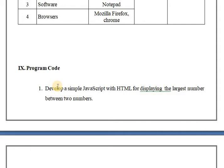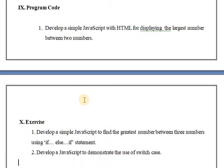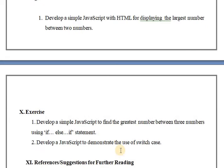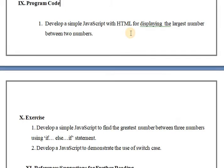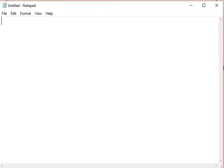Next is the program code. The first program is: develop a simple JavaScript with HTML for displaying the largest number between two numbers. The exercise is: develop a simple JavaScript to find the greatest number among three numbers using if-else-if, and develop a JavaScript to demonstrate the use of the switch case statement. Here I am performing a simple if-else statement and the switch case statement.